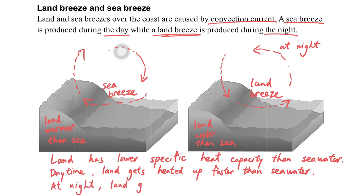While at night, the land will also get cooled down faster than the sea water. So this phenomenon can be explained by convection current.